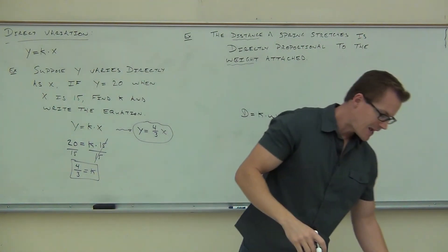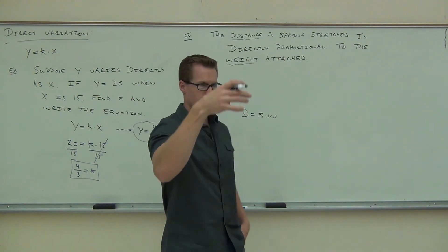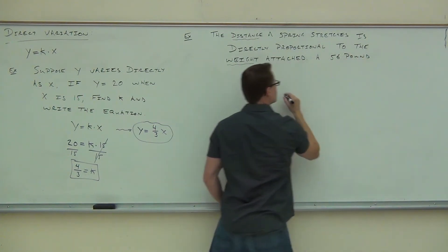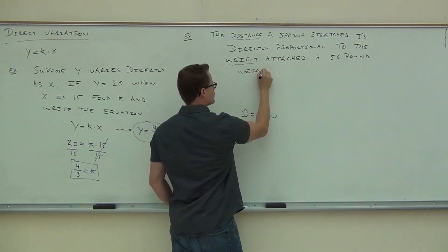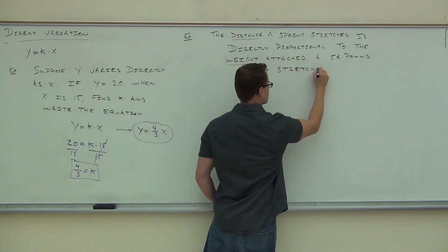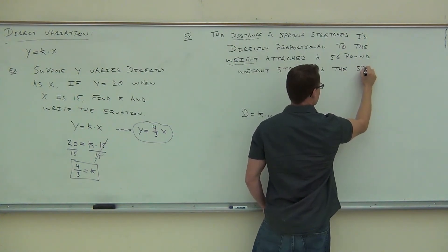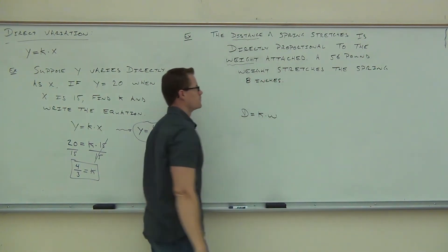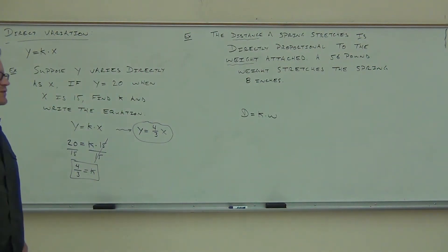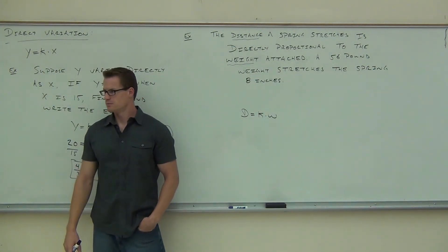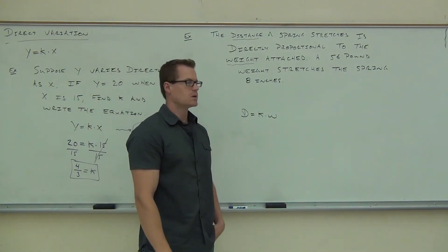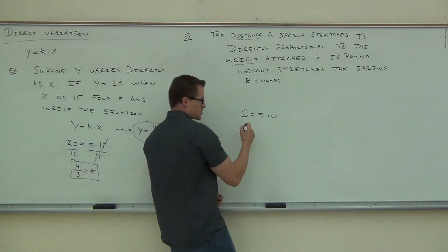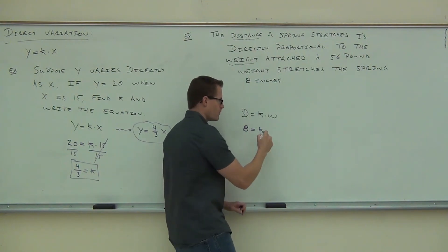Then it has to give you some information. Let's say a 56-pound weight on this spring stretches it 8 inches. Can you tell me where the 56 is going to go in the equation, and where the 8 is going to go? We can substitute our 56 and our 8: the distance it's stretching is 8, we don't know what k is, times 56.